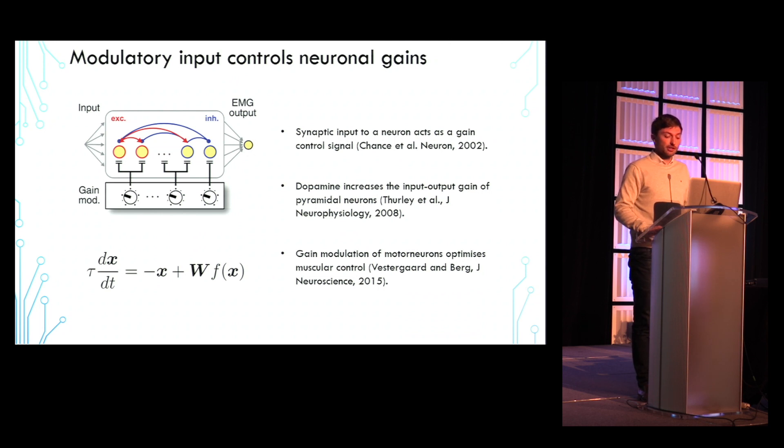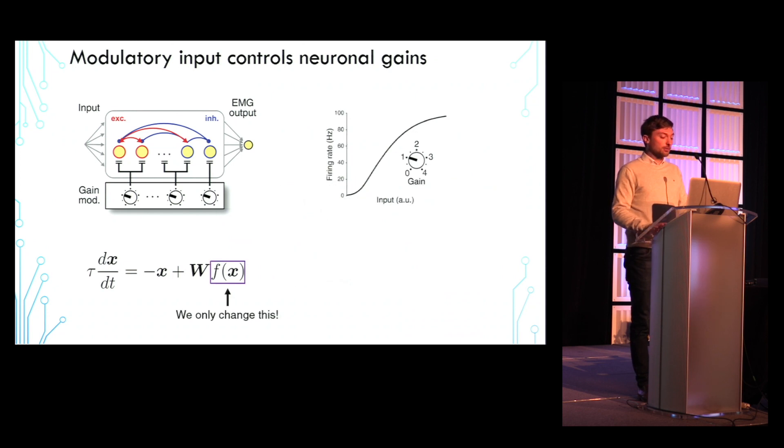The slope of the non-linear gain function F, which converts neuronal activity into firing rates, is the only part of the model that is affected by this modulatory input.